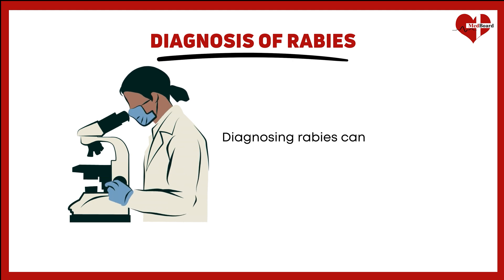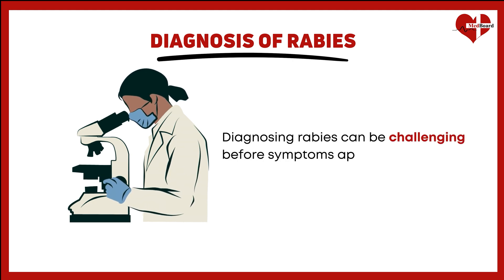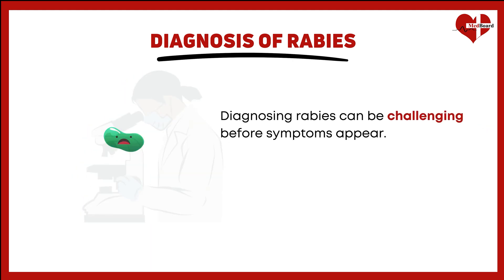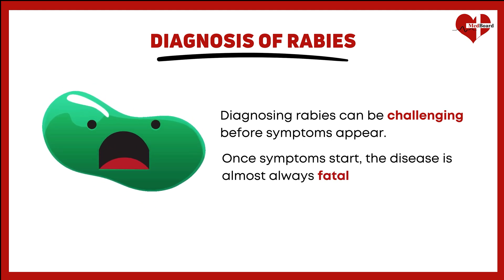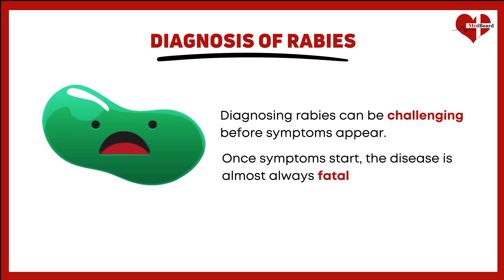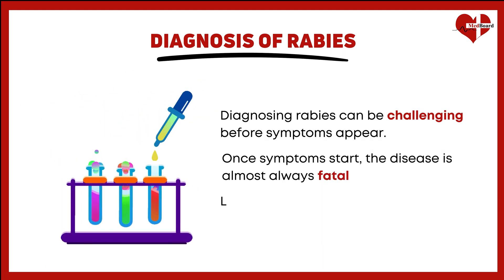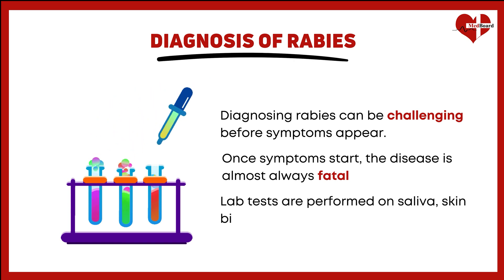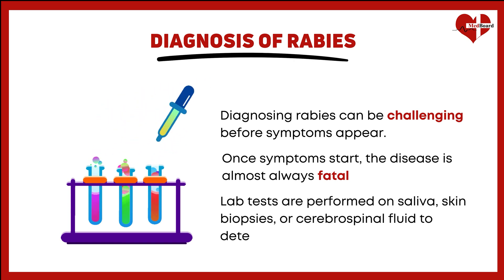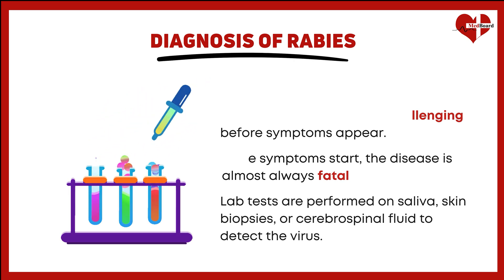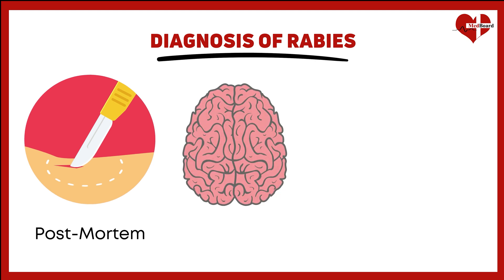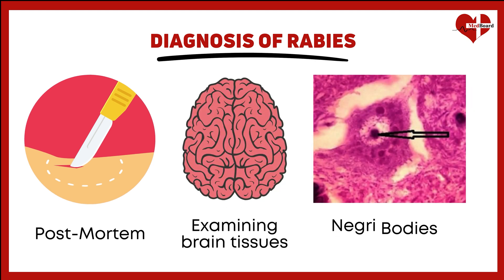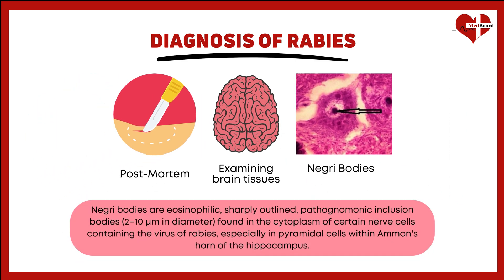Diagnosing rabies can be challenging before symptoms appear. Once symptoms start, the disease is almost always fatal, so early detection is crucial. Lab tests are performed on saliva, skin biopsies, or cerebrospinal fluid to detect the virus. Post-mortem diagnosis in animals is typically done by examining brain tissue for Negri bodies, which are inclusions found in neurons infected with rabies.